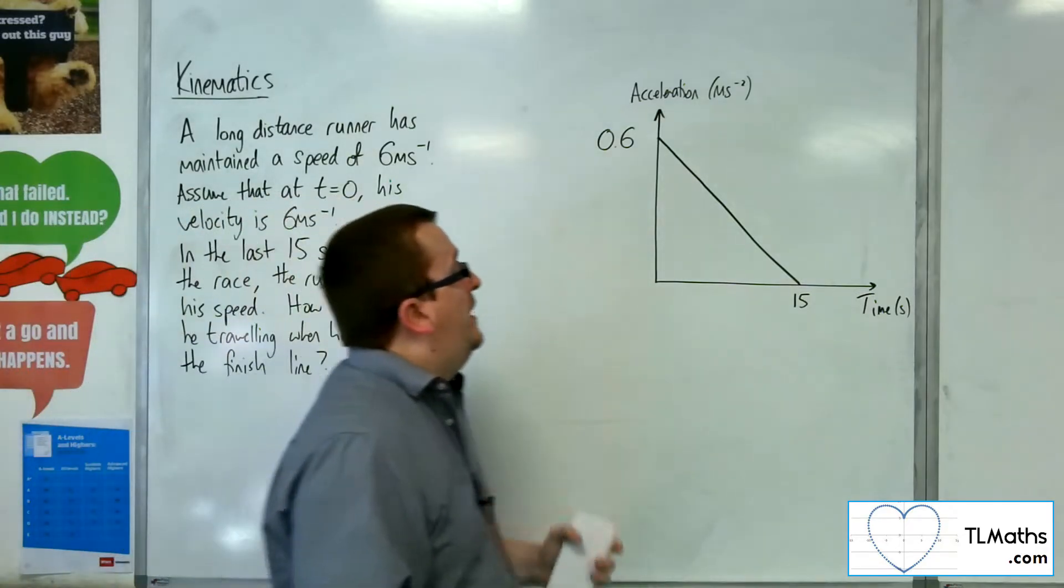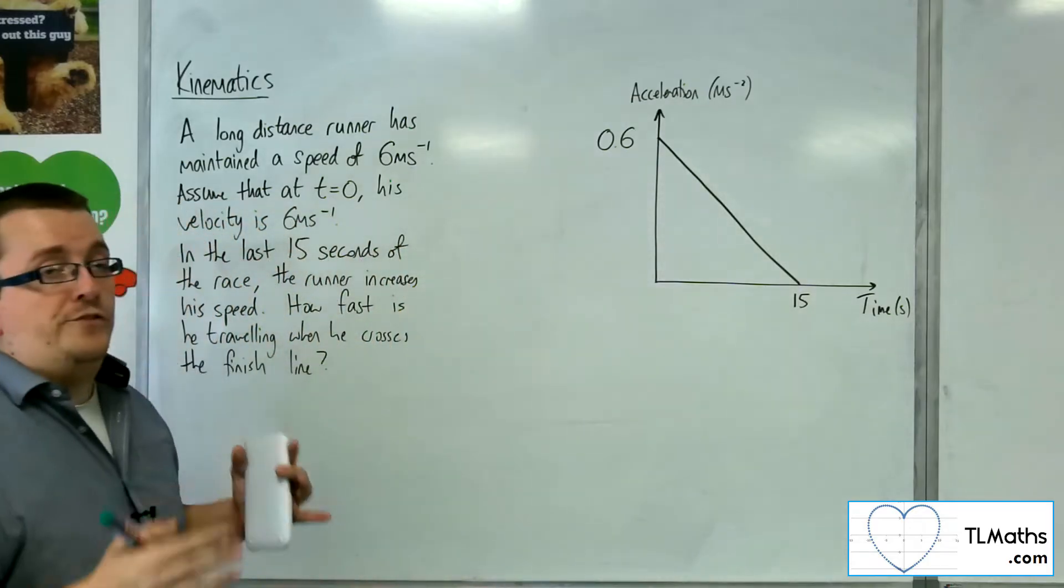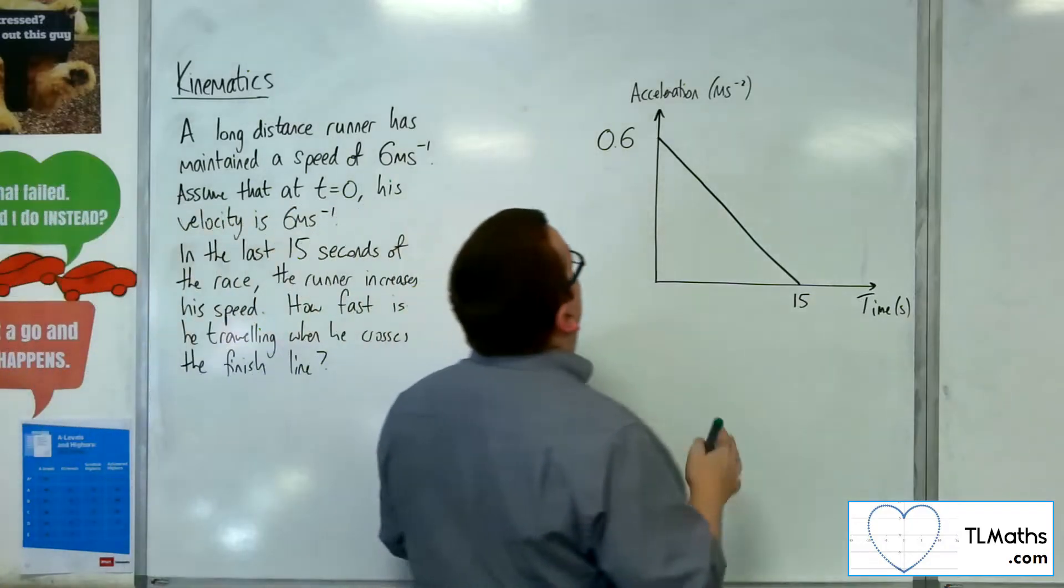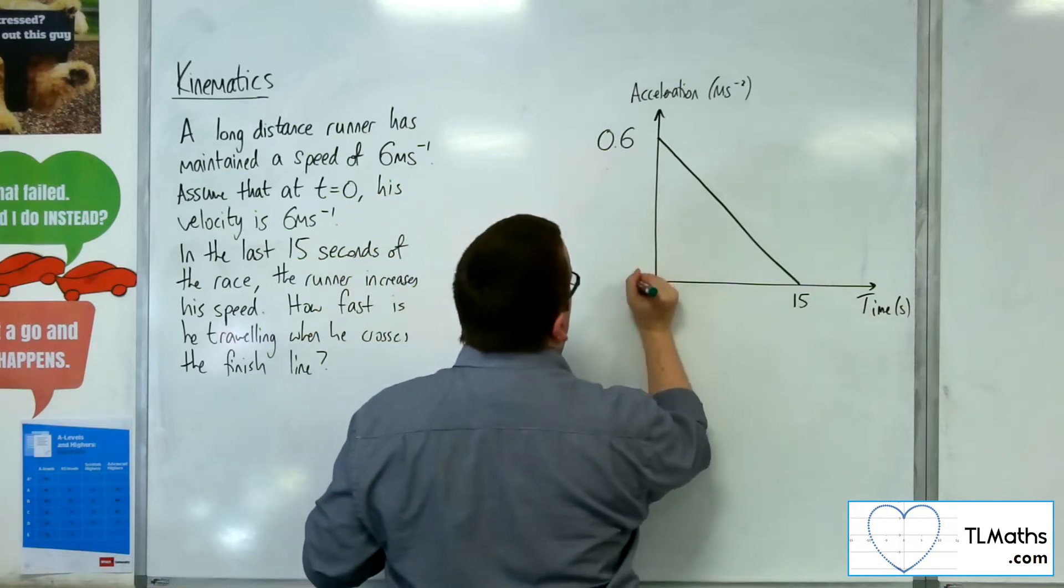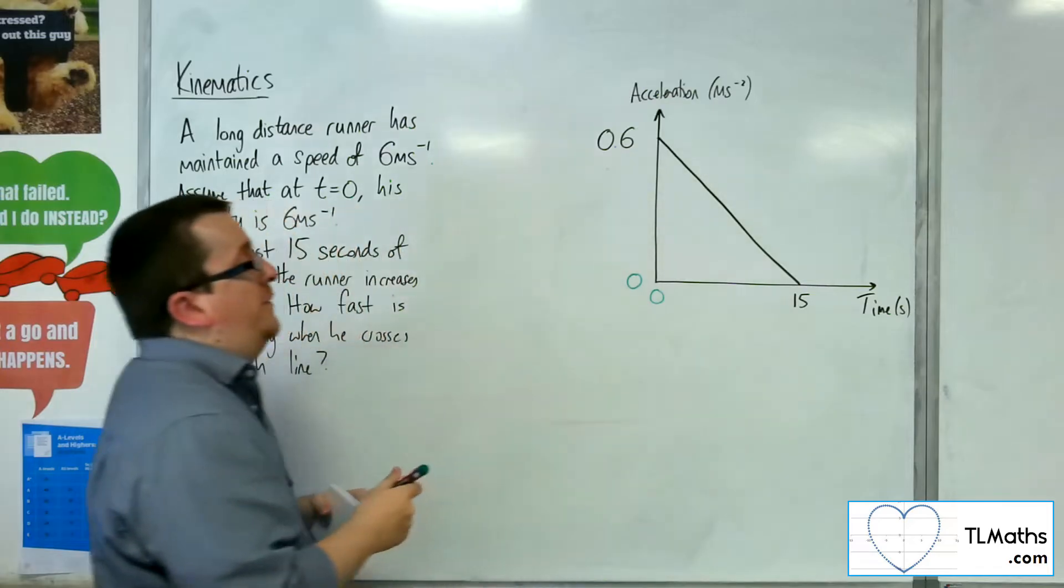So this shows the acceleration time graph of his motion in the last 15 seconds of the race. So it goes from 0.6 metres per second per second down to 0 metres per second per second in those 15 seconds.